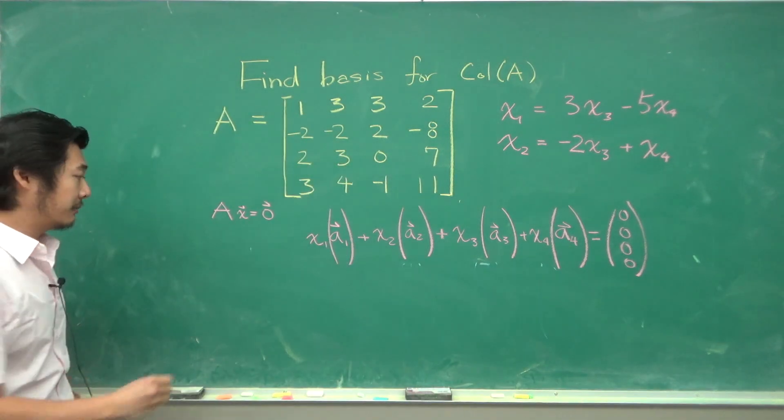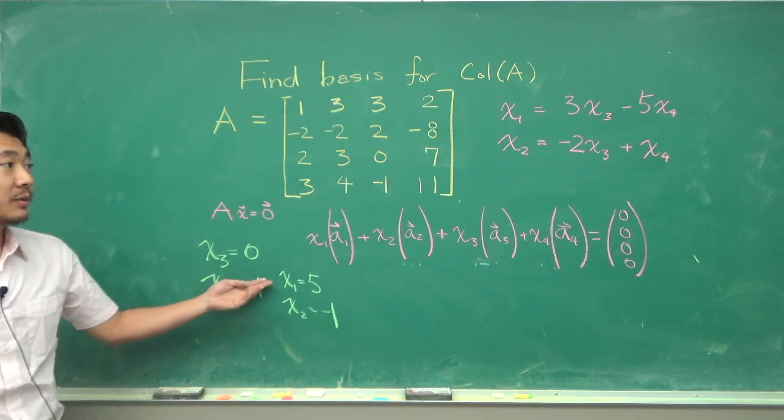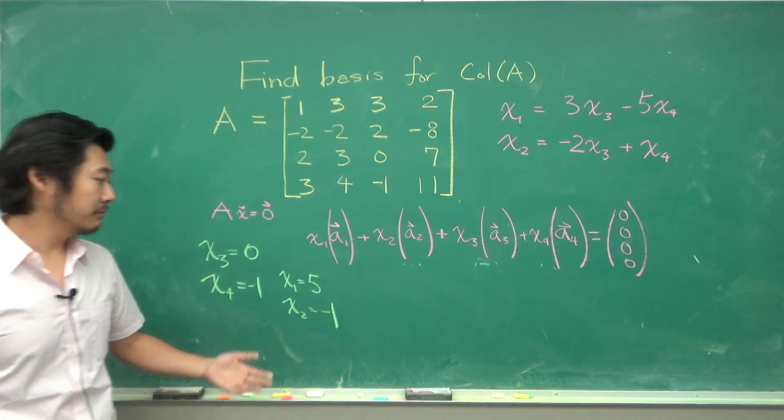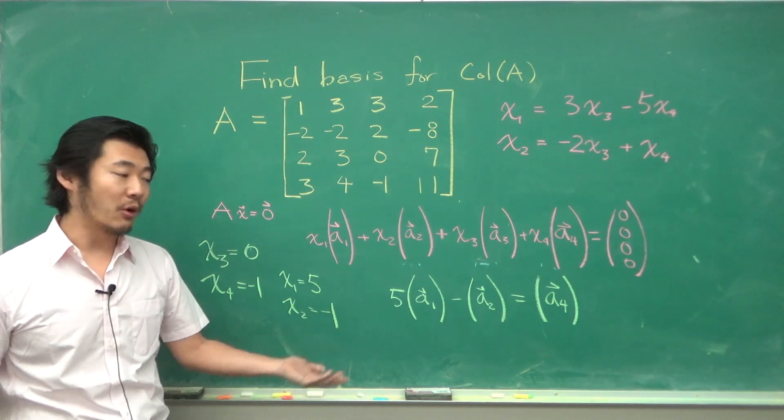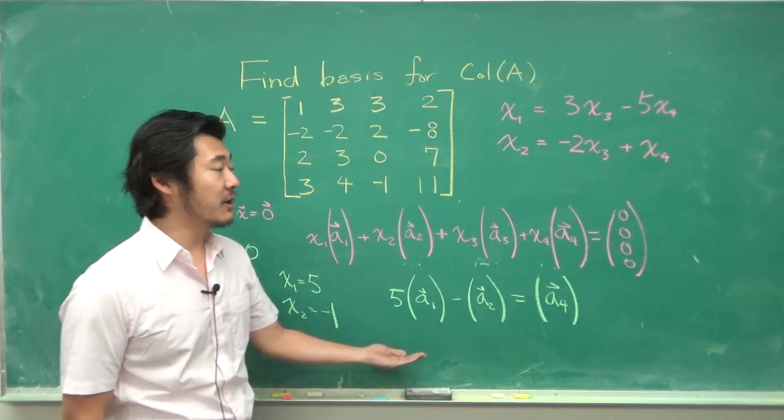Similarly we can pick x3 as 0 and x4 as negative 1 so that x1 is 5 and x2 is negative 1, and we get the relation that 5 times A1 minus A2 is equal to A4. So A4 can be written as a linear combination of A1 and A2.